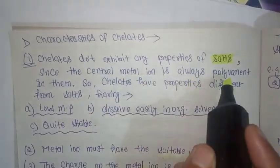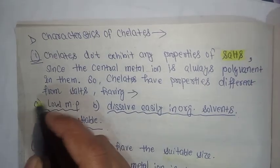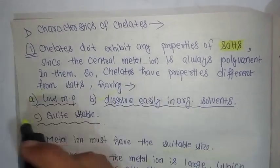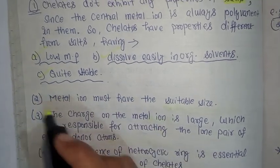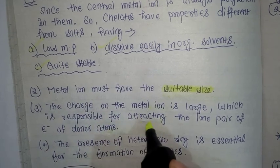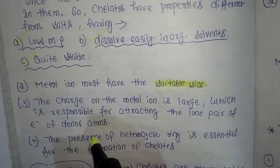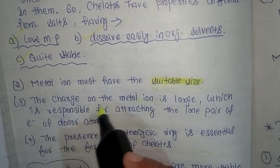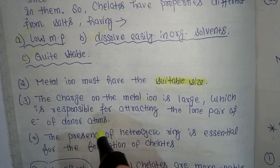Since central metal ion is always polyvalent in them, chelates have properties different from salts, having low melting points, dissolve easily in organic solvents and are quite stable.